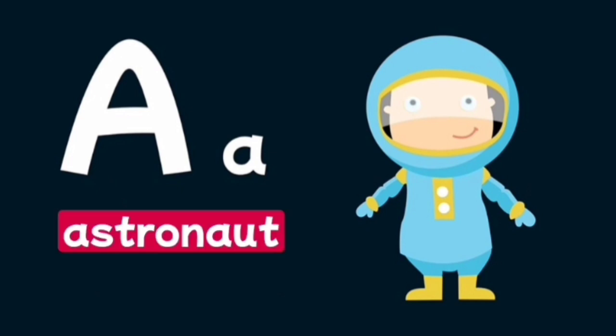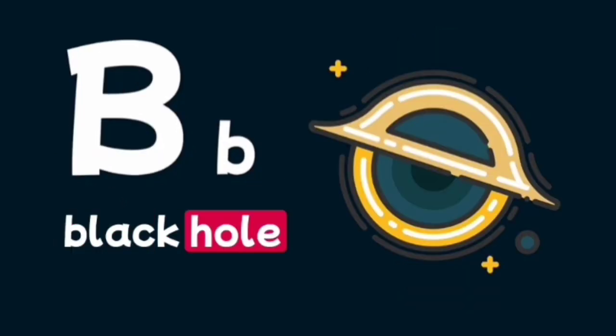A is for astronaut, a person who goes into space. B is for black hole, a place in space from where nothing can escape.